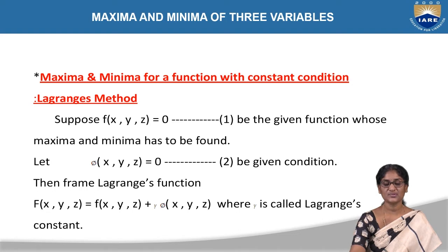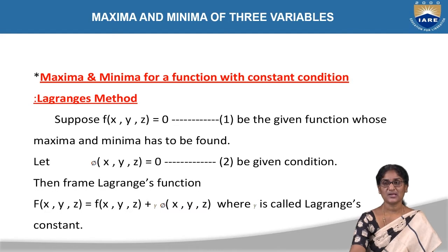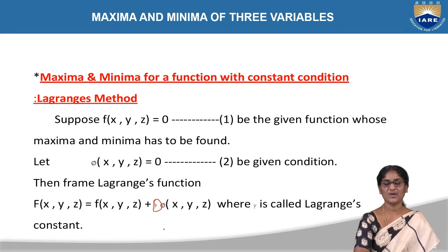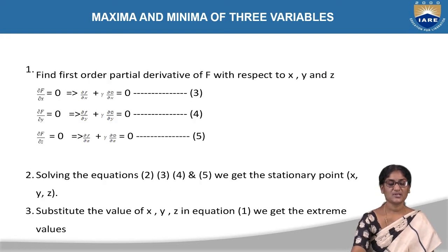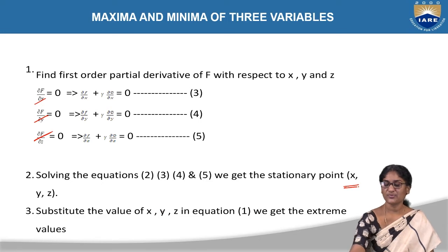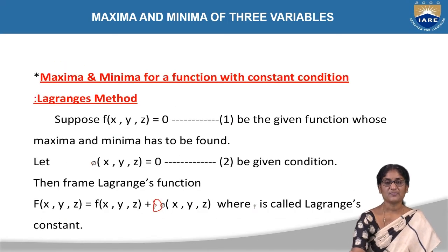Suppose f(x, y, z) is a function whose maxima and minima we need to find out, with a condition phi(x, y, z) = 0. First we need to frame the Lagrange's auxiliary equation: capital F(x, y, z) = small f(x, y, z) + lambda · phi(x, y, z). Then find the first-order partial derivatives of capital F with respect to x, y, and z, equate those three to zero, and we get the stationary points x, y, z, which can be substituted into the given function to get maxima and minima.